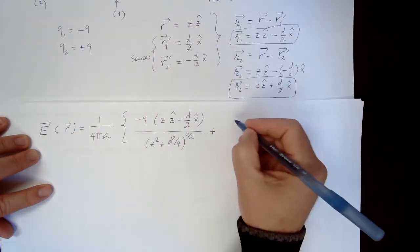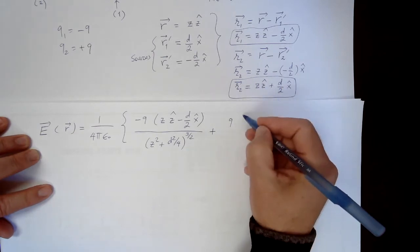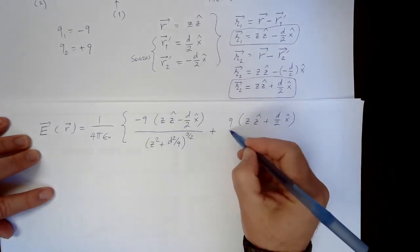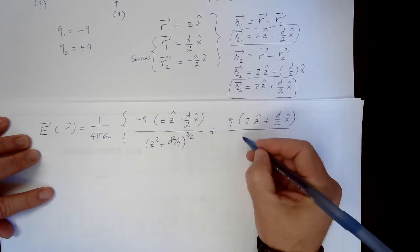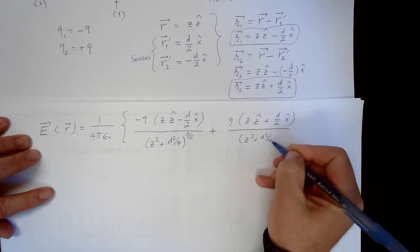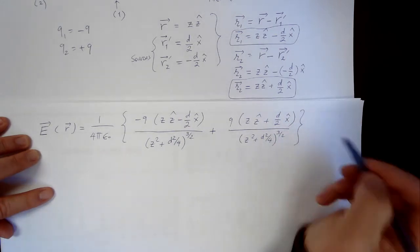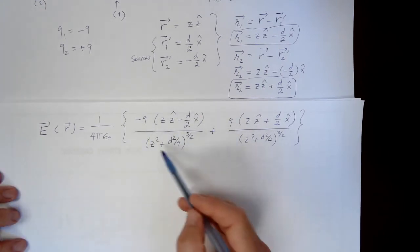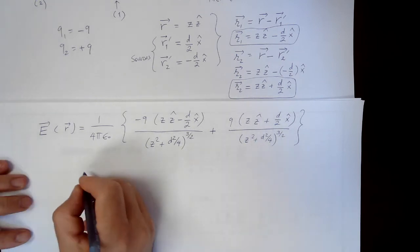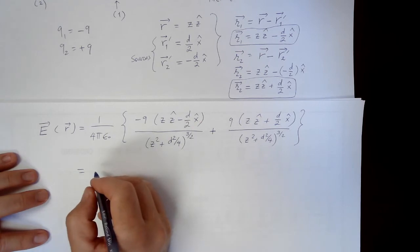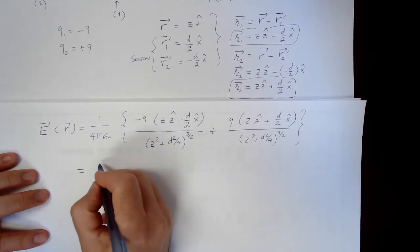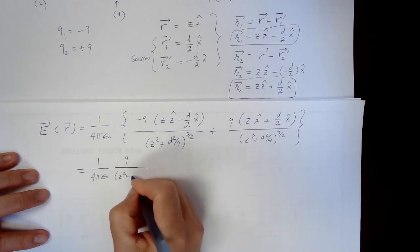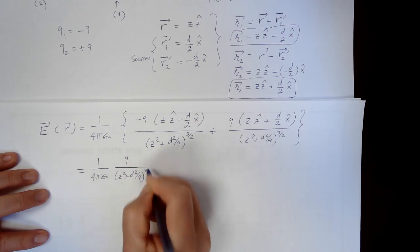Now q2, that's positive q. And then script r2, z z hat plus d over 2 x hat. And divided by, same thing here, the magnitude doesn't change, z squared plus d squared over 4 raised to the 3 halves, right? So now, I mean, q is common. There is negative sign here. Denominators are common. So I can do a little bit of factoring and then add these. And then this negative sign can be distributed. So I would have 1 over 4 pi epsilon naught, q divided by z squared plus d squared over 4 raised to the power 3 halves.